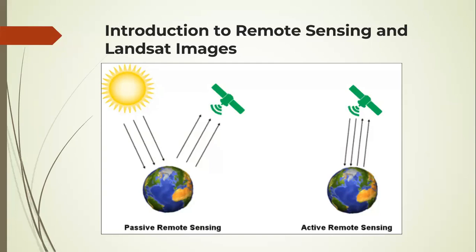An example of passive remote sensing satellites or sensors is Landsat, and that is what we are going to look at.